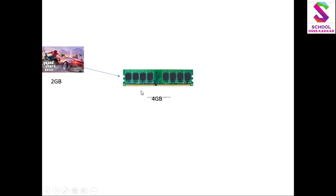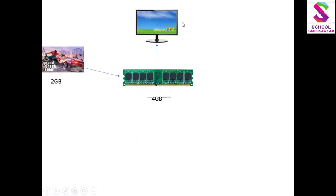यह मानो एक game है 2GB की - इसको हमने command दी. यह hard disk में already install की हुई है, वहां से उठेगी और उठकर आएगी हमारे RAM के अंदर. अब हमारे पास जो RAM है वो है 4GB. हमने 2GB की एक game open की है और RAM की capacity है 4GB, तो RAM ने 2GB occupy किया और 2GB बची है.